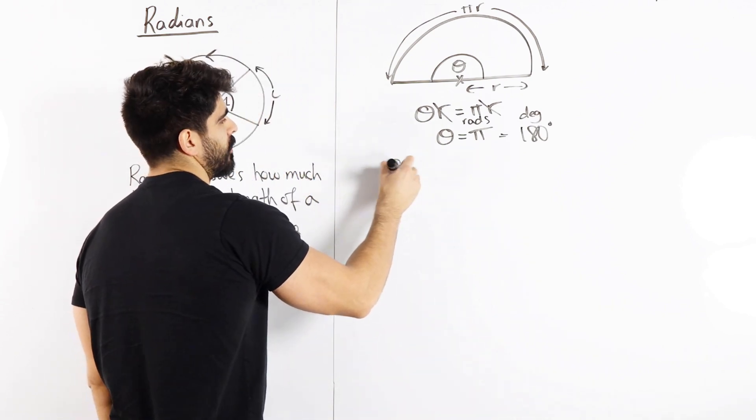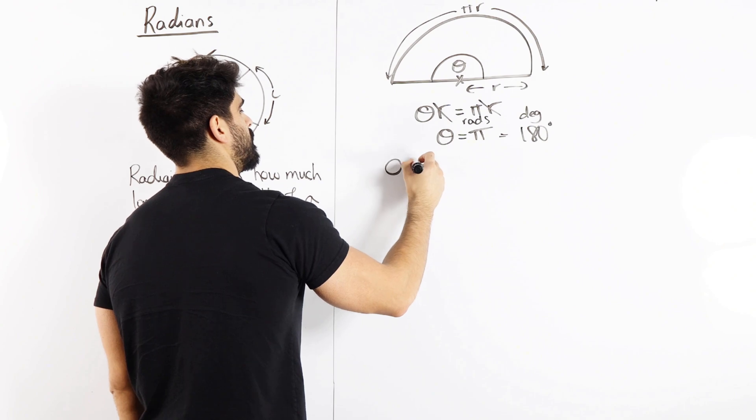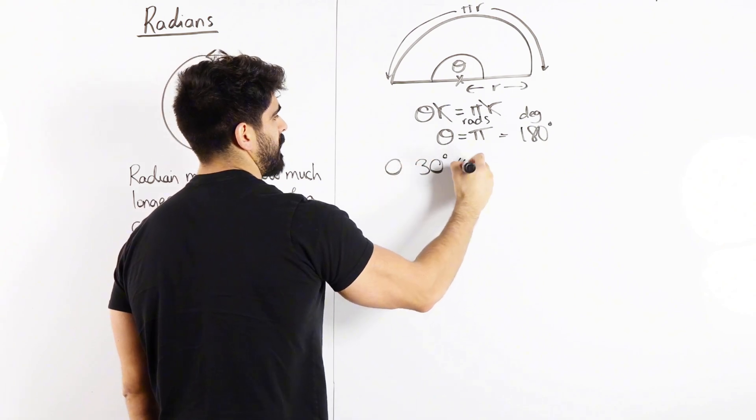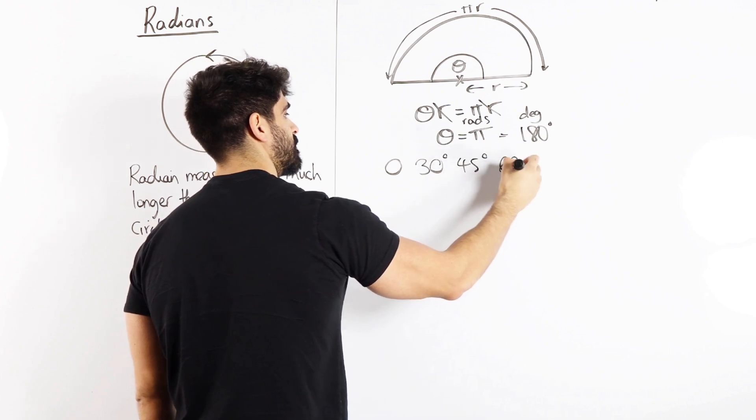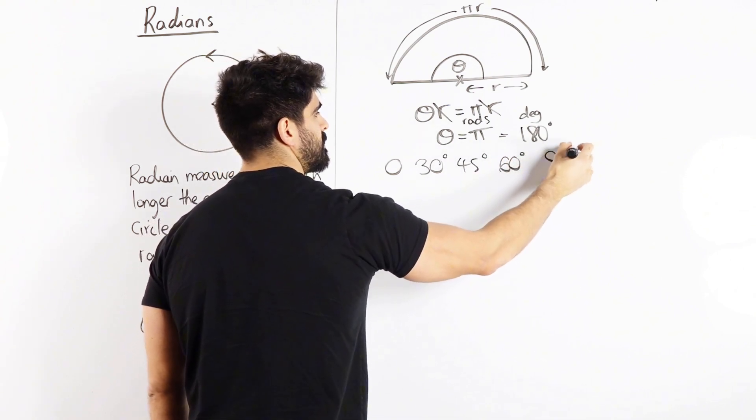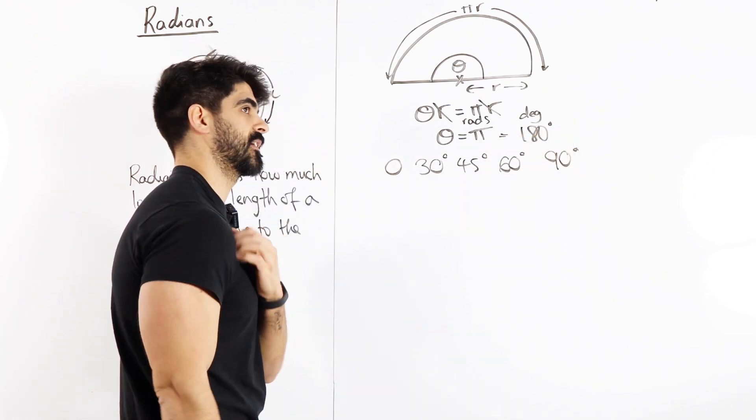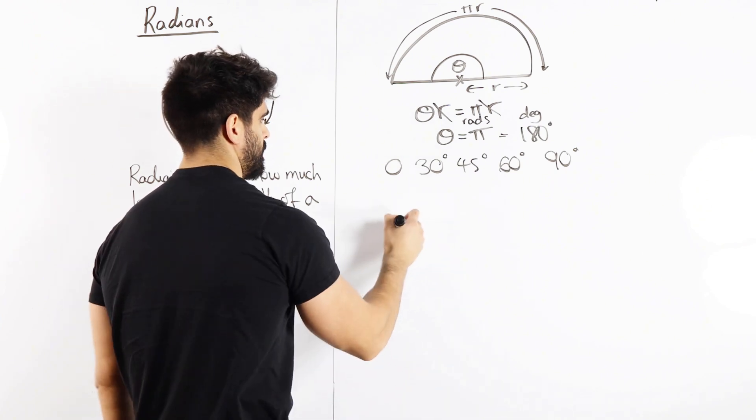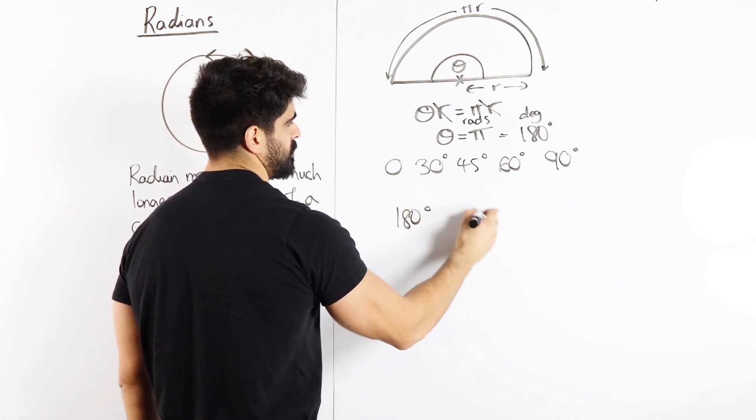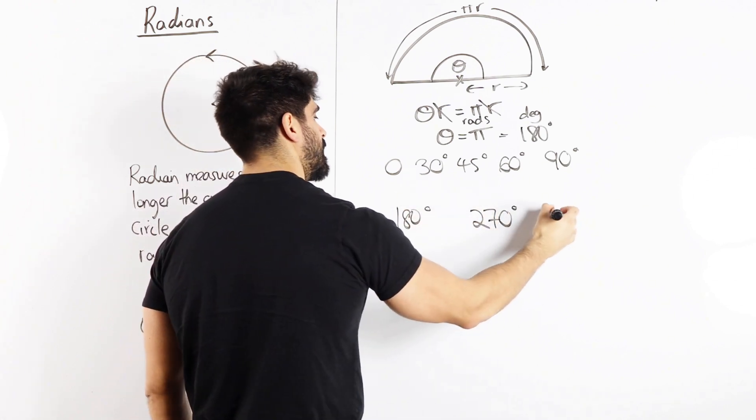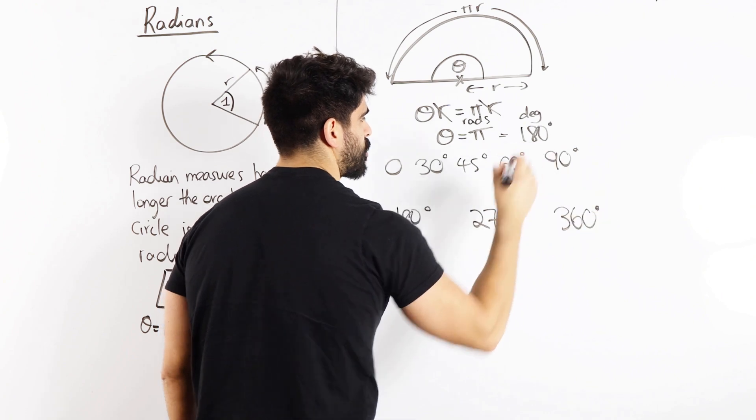What are the common angles we should know? Obviously zero. 30 degrees, 45 degrees, 60 degrees, 90 degrees. What else should we put? After that, probably 180, 180 degrees, 270 degrees, and 360. These are the common angles.